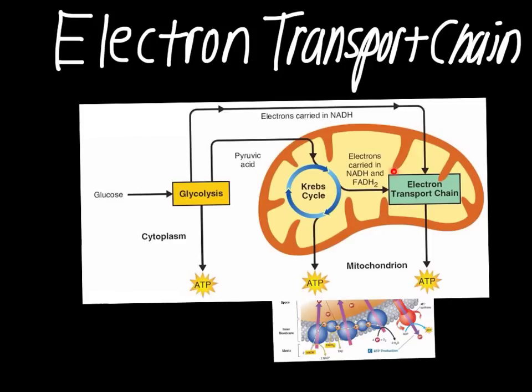It's taking place inside of the membrane of the mitochondrion. Specifically, it's actually happening embedded in the membrane. The Krebs cycle is taking place in the area called the matrix, which is like the fluid on the inside. ETC is happening in the membrane, just like the light-dependent reactions were happening in the membrane of the thylakoid last chapter when we were talking about the process of photosynthesis.